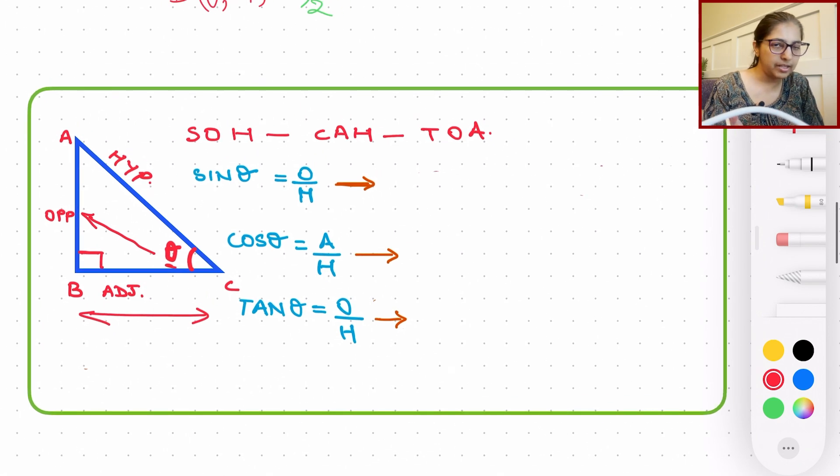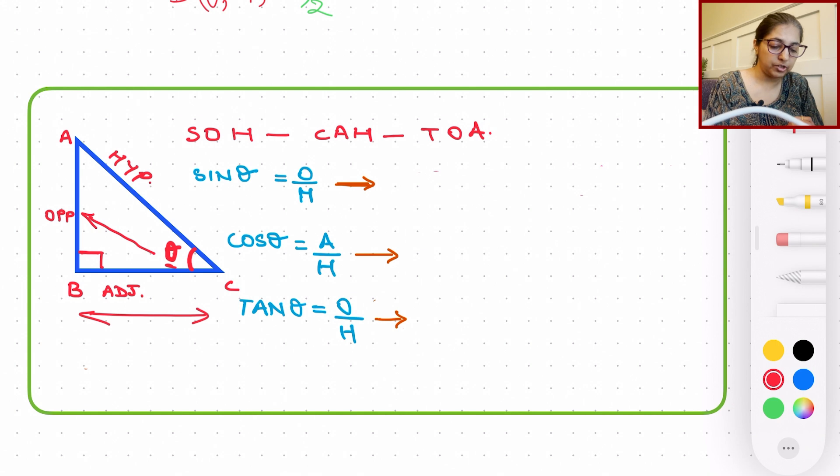So the side opposite to theta is going to be the side AB and the side adjacent is going to be the side BC. And from SOHCAHTOA, that definition, I will go ahead and tell you, sine is going to be the opposite over hypotenuse, which is going to be for this triangle AB divided by AC. And cos is going to be adjacent divided by hypotenuse, which is BC over AC.